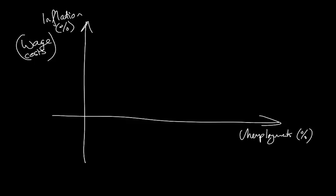We saw that there is generally an inverse relationship between these two. When unemployment is low, that tends to mean aggregate demand is relatively high and therefore we get a high level of inflation. As inflation pressures disappear, that tends to suggest unemployment will be higher. So what we end up with is a curve like that, which we call the short-run Phillips curve.